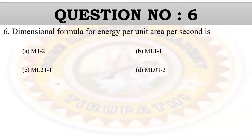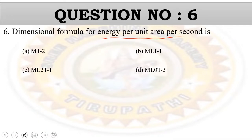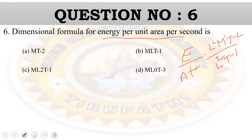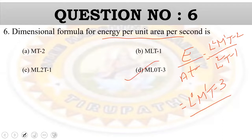Question number 6: What is the dimensional formula for energy per area per second? Energy has dimensions ML²T⁻². Dividing by area L² and by time T⁻¹ gives ML⁰M¹T⁻³, which simplifies to M¹T⁻³. Option D is the correct answer.